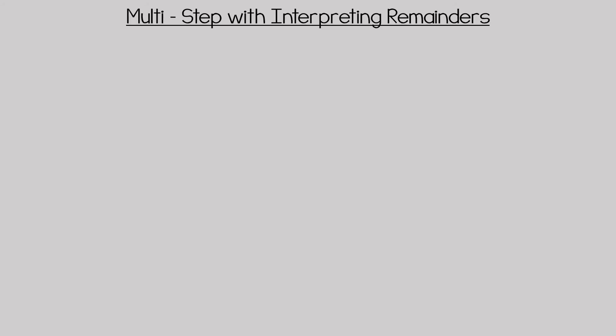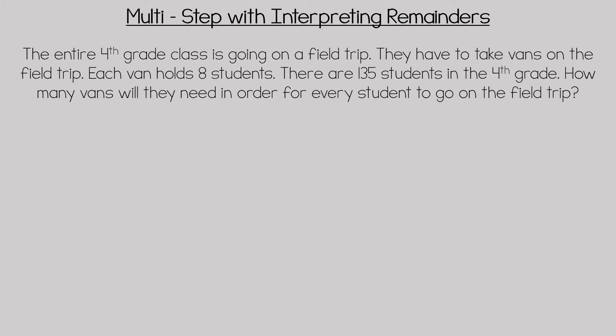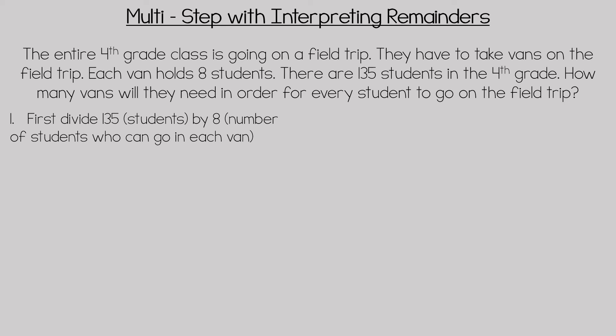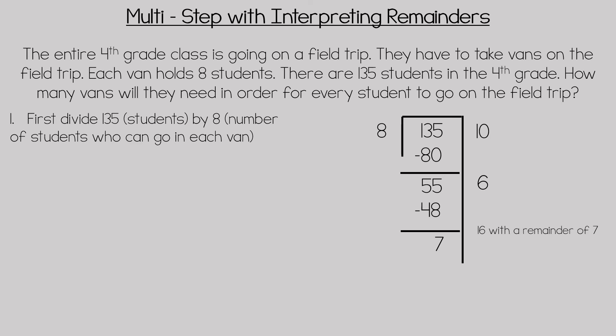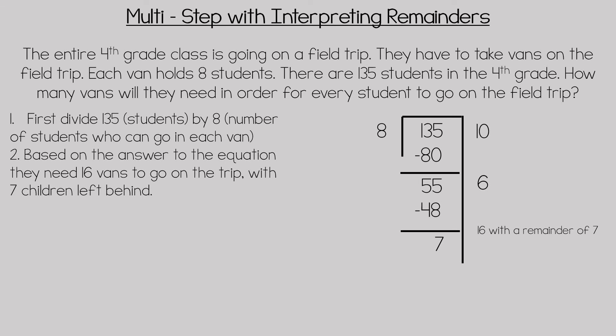This word problem is an example of a multi-step word problem with interpreting remainders. The entire fourth grade class is going on a field trip. They have to take vans; each van holds eight students. There are 135 students in the fourth grade. How many vans will they need in order for every student to go on the field trip? First, we divide 135 students by eight — the number of students who can go in each van — and that is 16 with a remainder of seven. Based on the equation alone, they would need 16 vans with seven children left behind.